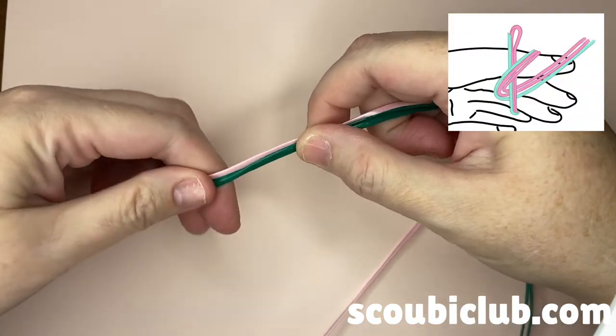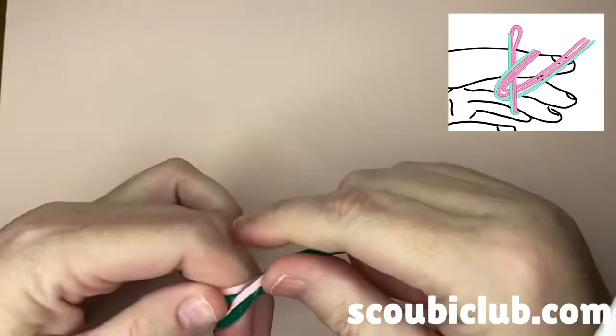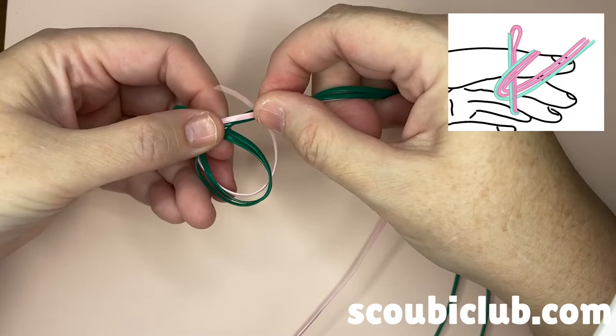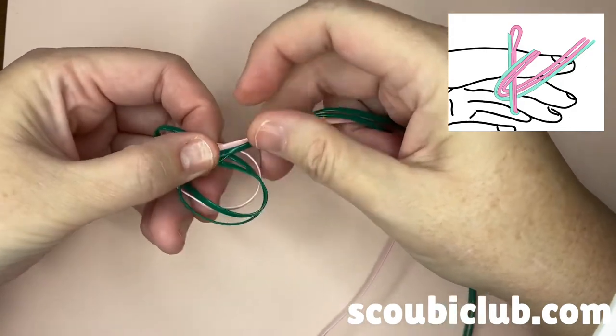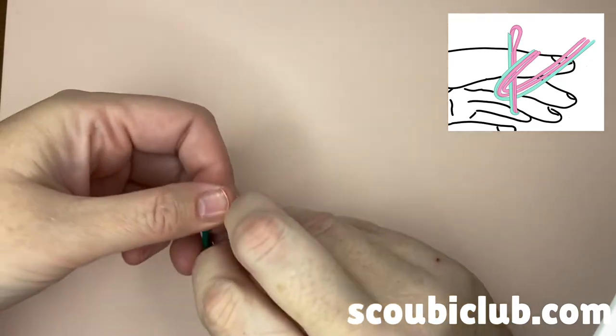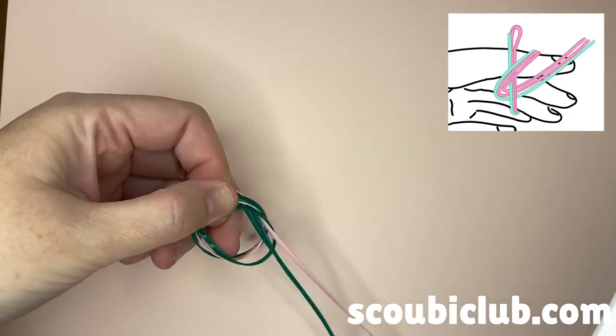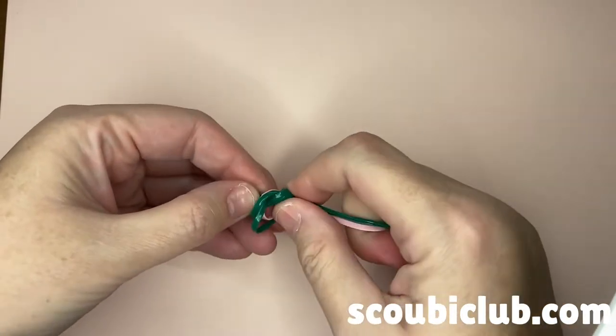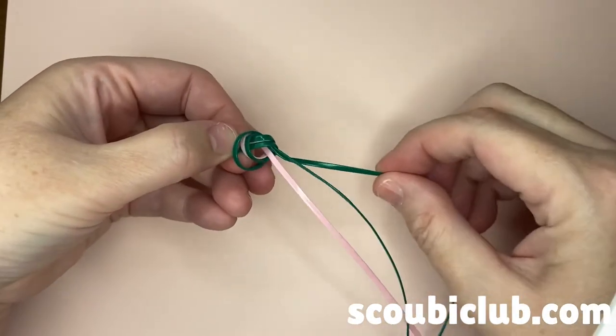Now you'll want to make an overhand knot. I like to call this a pretzel knot because it kind of starts looking like a pretzel, and you want to leave the loop about a half inch long at the top. This is what's going to go over the bead to close your bracelet.